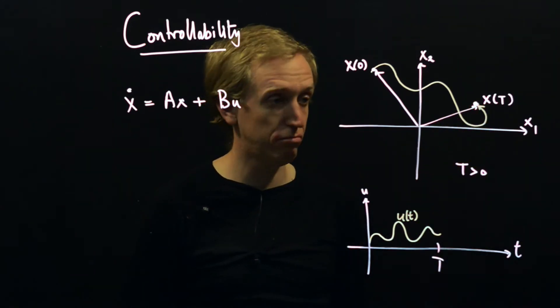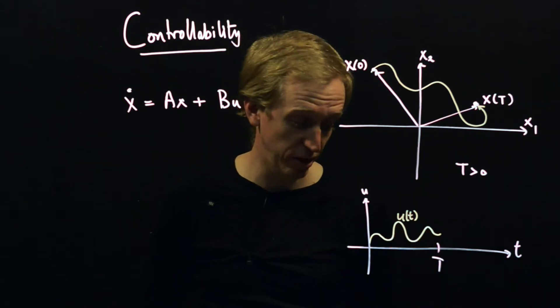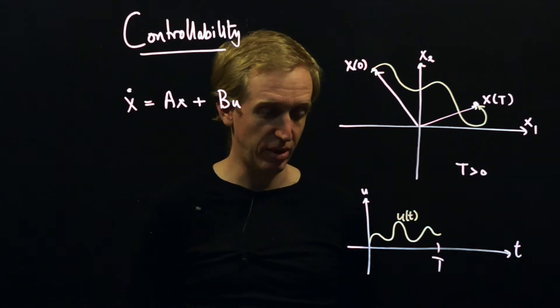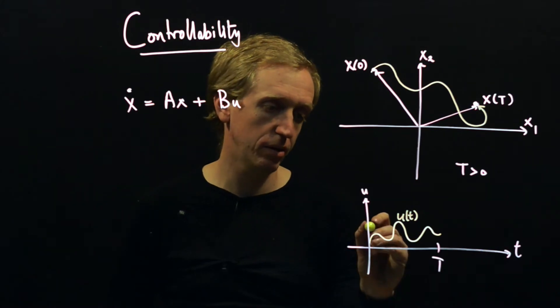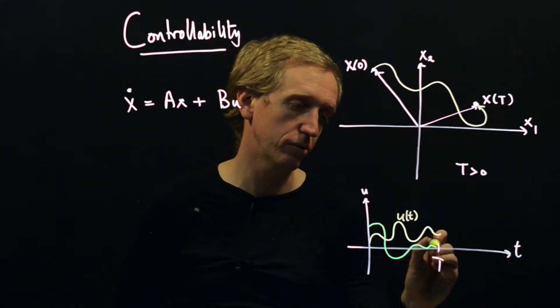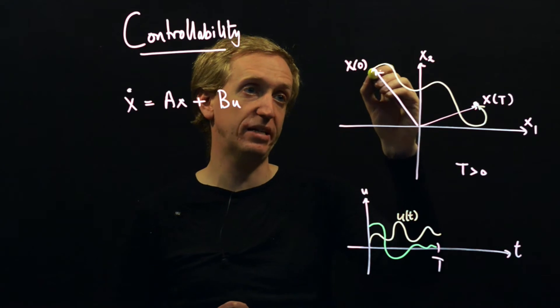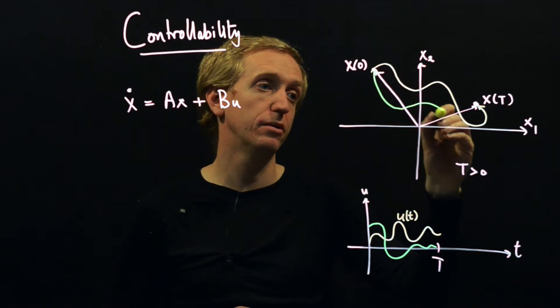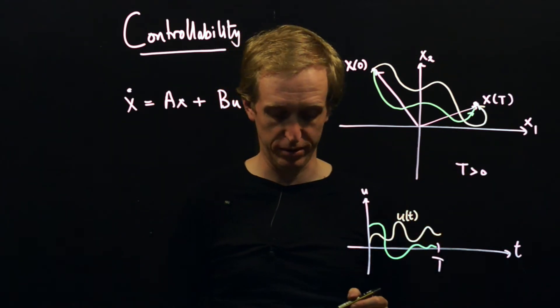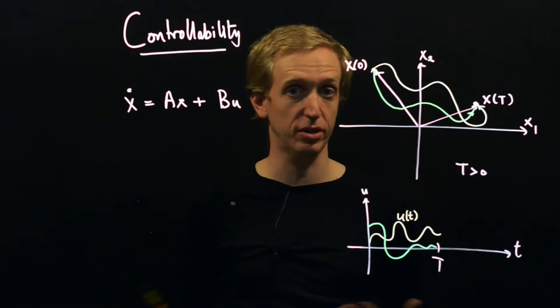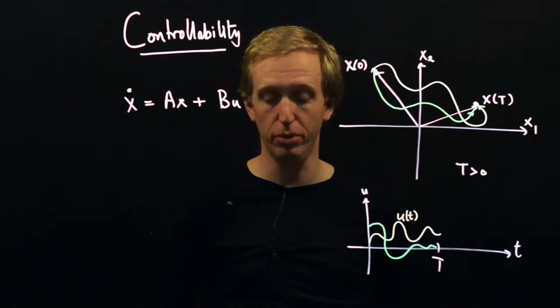It says nothing about this path being unique, so maybe there could be some other input that will have the same effect. It will take me from where I start to where I want to be just as well. Controllability doesn't care how you do it, it just cares does there exist such an input.